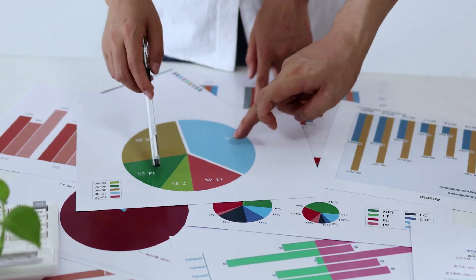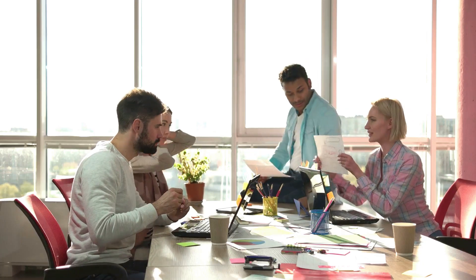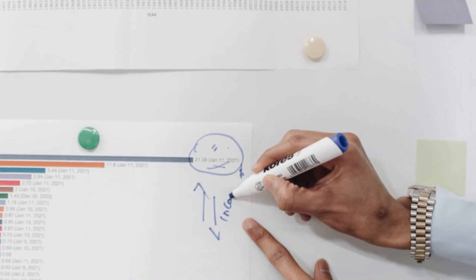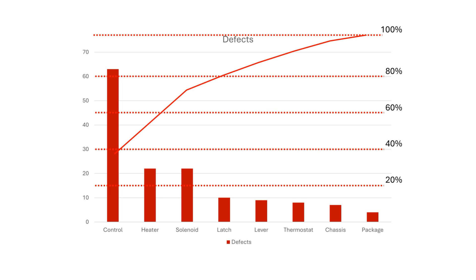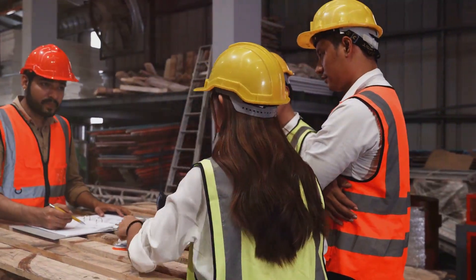The Pareto chart: prioritizing what matters. Now that we've collected data, it's time to focus on the most significant issues. Enter the Pareto chart, which applies the 80-20 rule: 80% of problems are often caused by 20% of the causes. This principle, championed by Joseph Juran, helps teams focus their efforts where they'll have the greatest impact. In our toaster production case, the Pareto chart reveals that 40% of defects stem from issues with the control PCB. By addressing this single issue, we can drastically reduce defects. However, before taking action, we need to dig deeper to identify the root causes behind these defects.